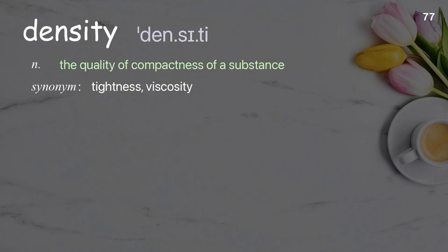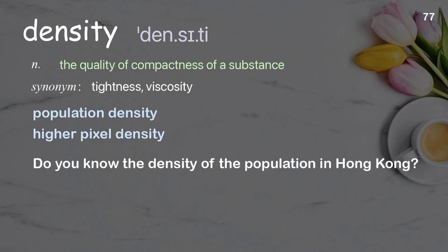Density. The quality of compactness of a substance. Examples: population density; higher pixel density. Do you know the density of the population in Hong Kong?